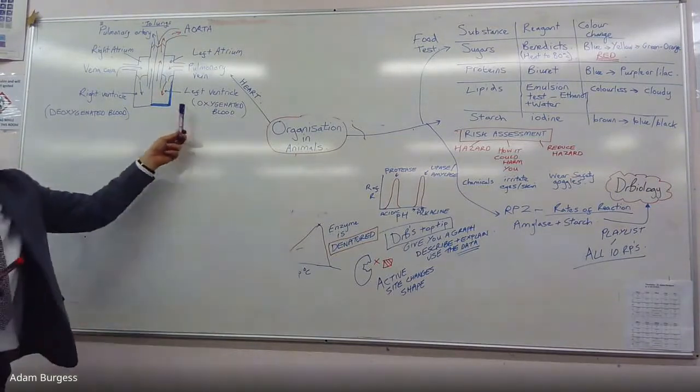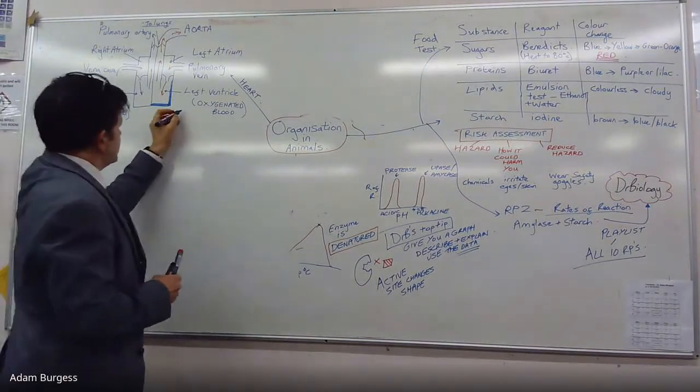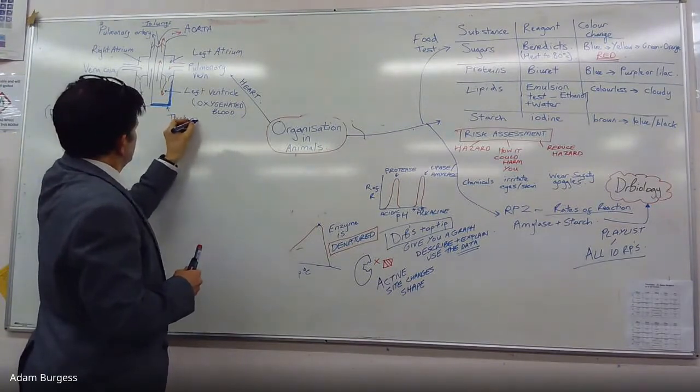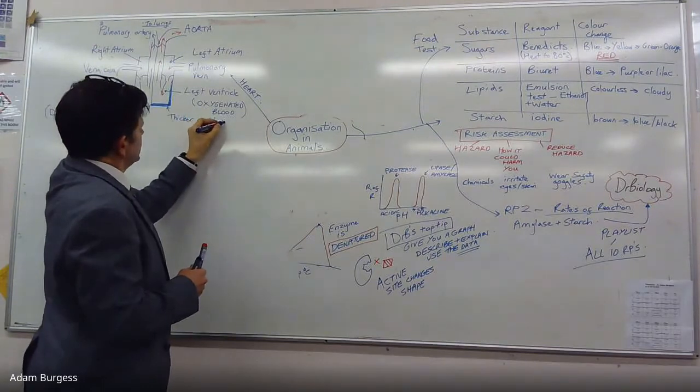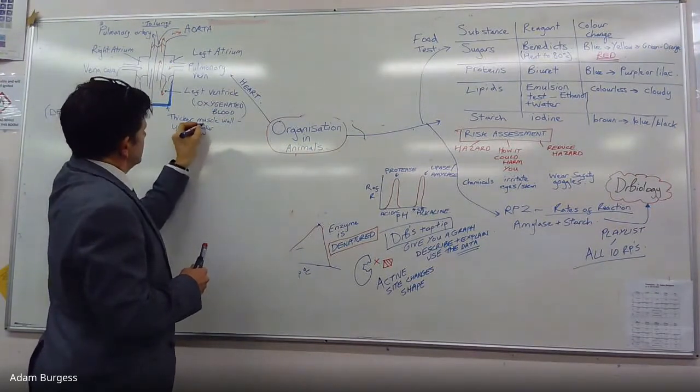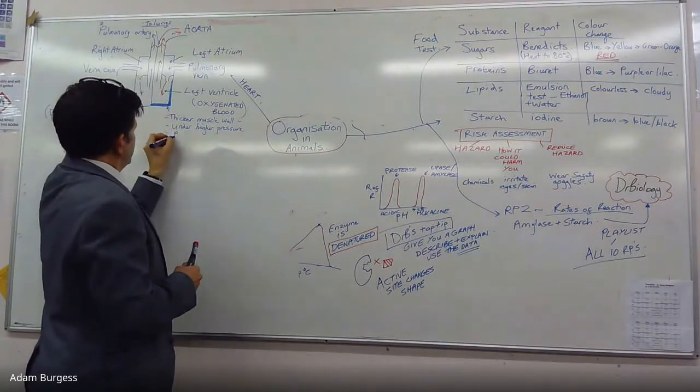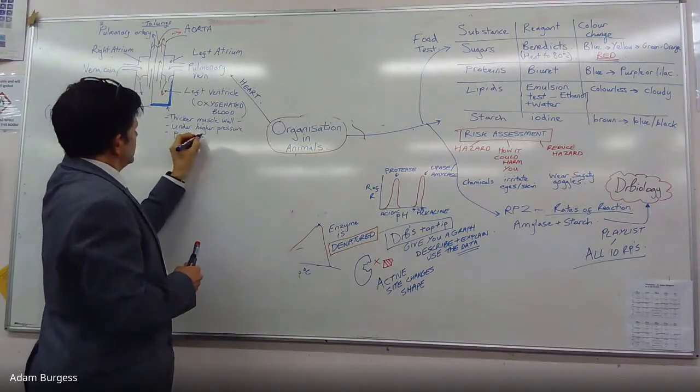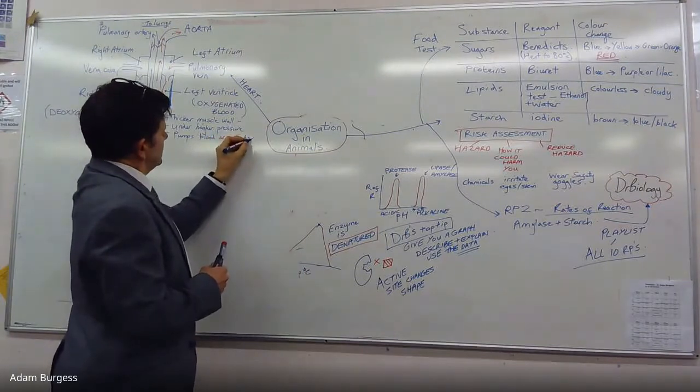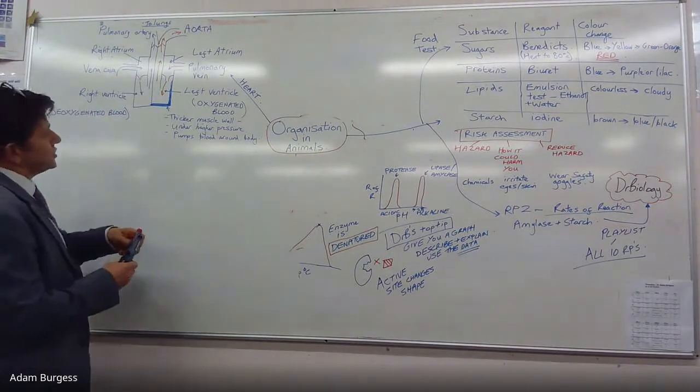Why is the left side thicker than the right side? Thicker muscle to pump blood around the body. It needs to be under higher pressure, so it's under higher pressure to pump blood around the body.